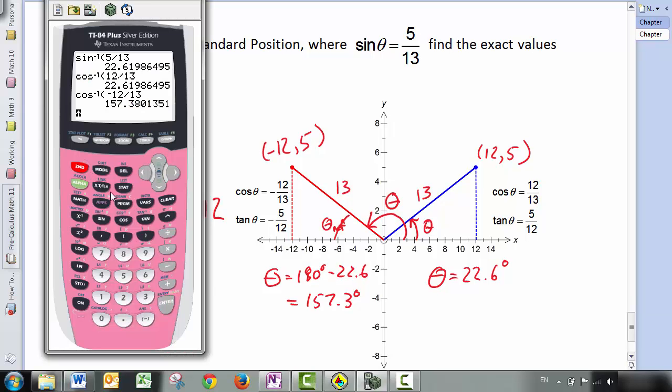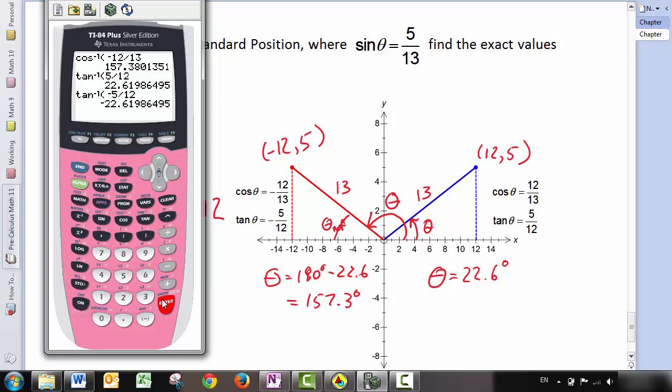But what if you'd use the inverse tangent? For 5 over 12, again, we get 22.6 degrees. That's fine. But for negative 5 over 12, we get negative 22.6 degrees. Huh? Here's what it comes down to. Your calculator doesn't understand the question that you're doing. It doesn't know the context. So it just tries to give you the simplest answer that it can, which means that sometimes it will give a negative answer. What I would like you to do is only to do the inverse trig calculation for positive values, which will always give you the reference angle. And then I want you to be smart enough to decide how to use the reference angle to find theta.